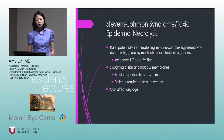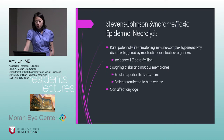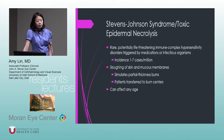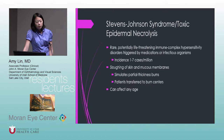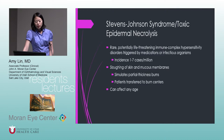I'll spend a bit more time on Stevens-Johnson syndrome and toxic epidermal necrolysis, because if you see this acutely and diagnose it, you can actually treat it to prevent further complications on the ocular surface. This is a rare, potentially life-threatening immune complex hypersensitivity disorder triggered by medications or infectious organisms. The incidence is 1 to 7 cases per million. There is sloughing of the skin and mucous membranes, simulating partial thickness burns, which is why patients get transferred to burn centers. It can affect anyone of any age.